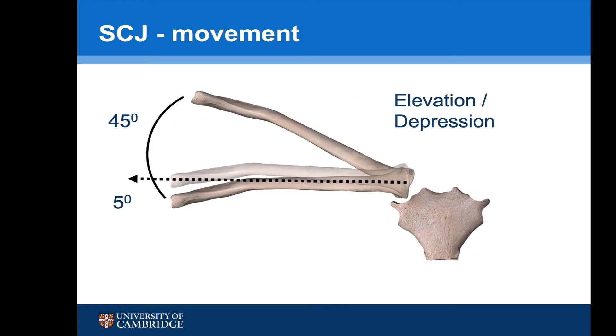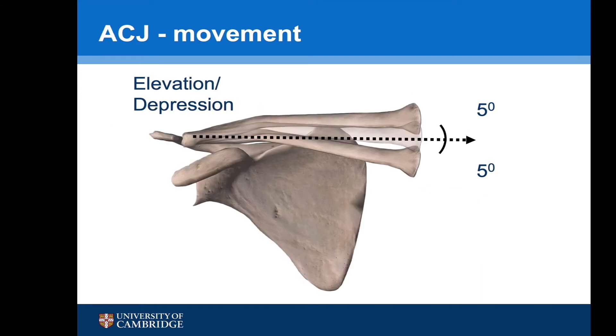Breaking this movement down into its component parts, the sternoclavicular joint allows for 45 degrees of elevation and 5 degrees of depression, and the AC joint 5 degrees of elevation and depression.